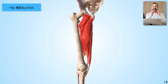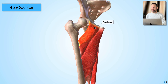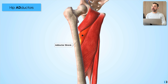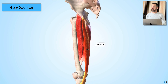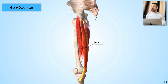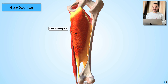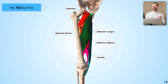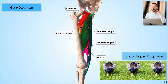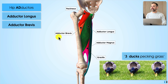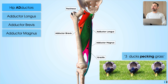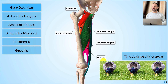Finally, let's talk through the hip adductor muscles. Starting from the top and working our way down: pectineus, adductor brevis, adductor longus, the gracilis muscle, and moving round to the back, the biggest of them — adductor magnus. A key memory aid is 'three ducks pecking grass.' The three ducks are adductor longus, adductor brevis, and adductor magnus; pecking stands for pectineus; and grass is where we remember gracilis. So there you go — the hip adductors: three ducks pecking grass.